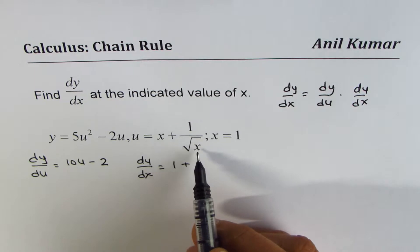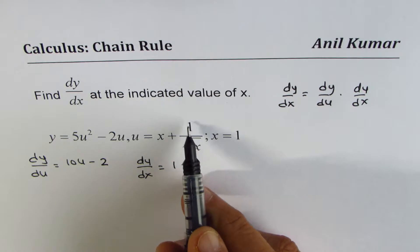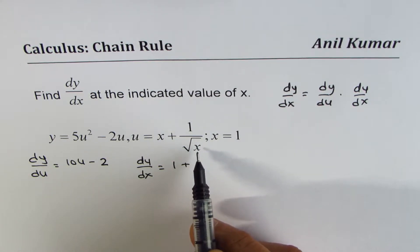So you can write du/dx as derivative of this function. Derivative of x is 1 plus... Now here, you could apply either the quotient rule or the product rule. Whenever there is square root, I prefer to apply the quotient rule.